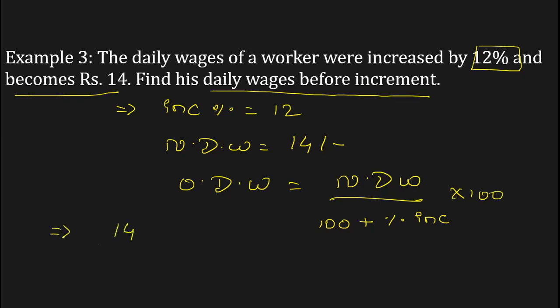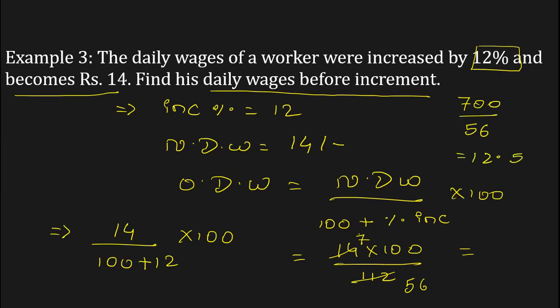We'll be getting 14 rupees upon 100 plus 12, into 100. Now solve this one. We'll be getting 14 into 100 upon 112, which is 700 upon 56, which gives you the answer 12.5.